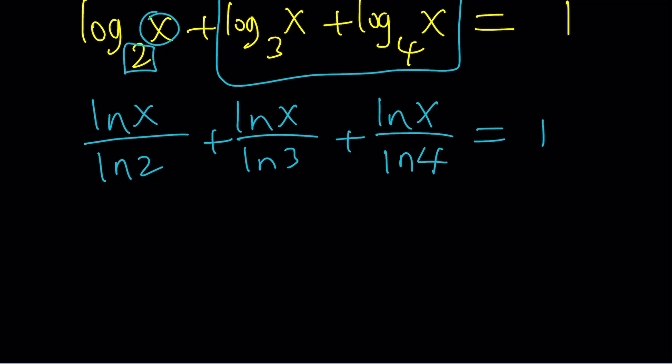So now ln x seems to be a common factor. I'll take it out. And then from here, I'm getting 1 over ln 2 plus 1 over ln 3 plus 1 over ln 4 equals 1.